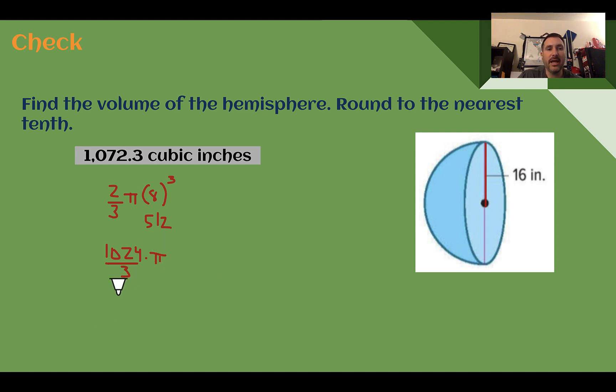Using a calculator, I get 1072.33, which rounding to the nearest tenth, that would round down. So just 1072.3.